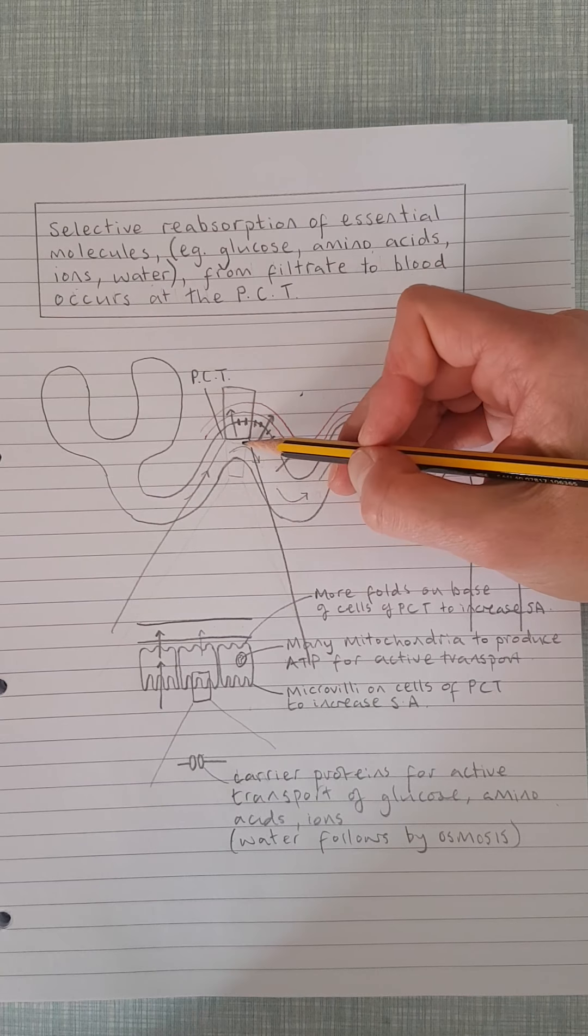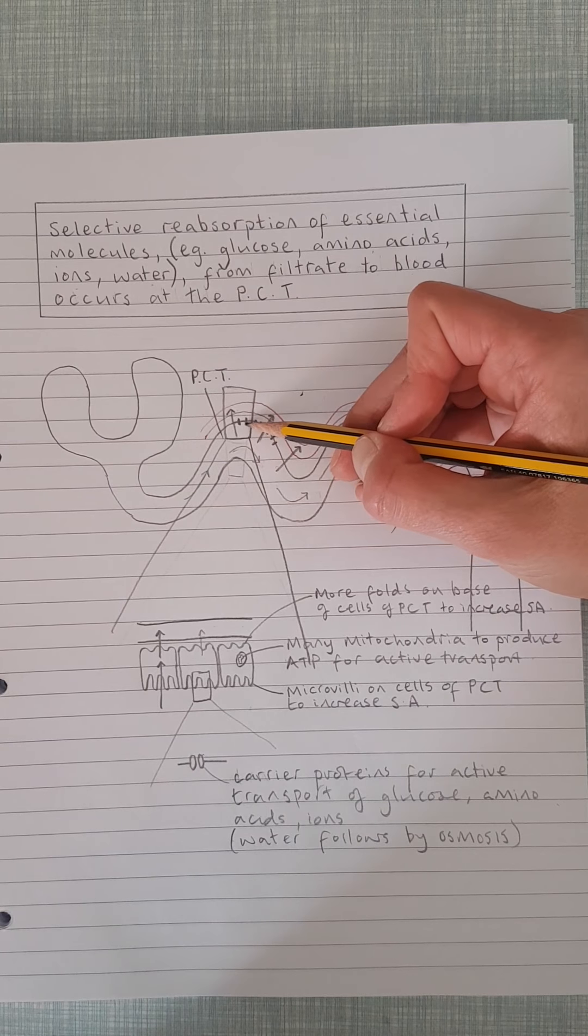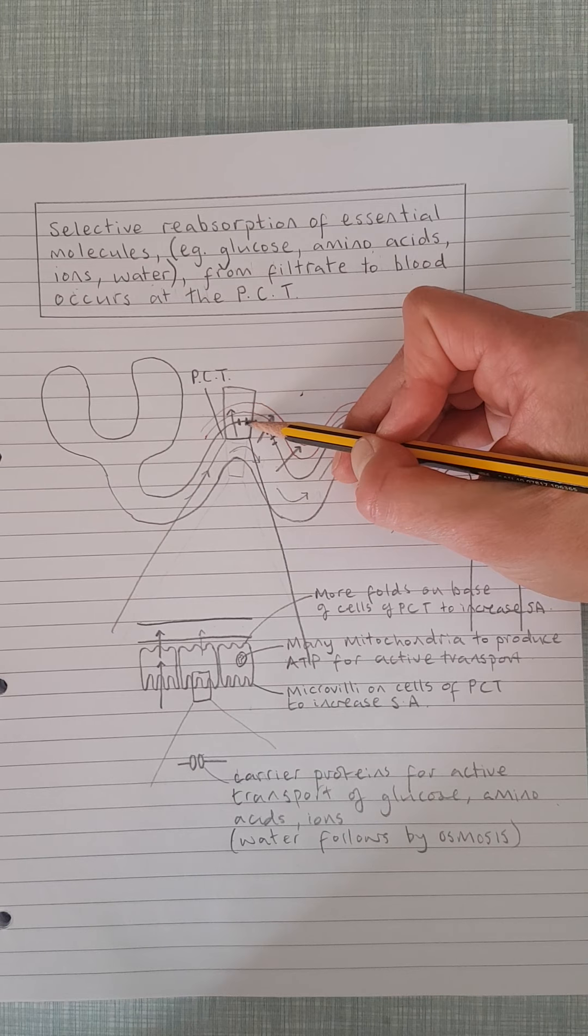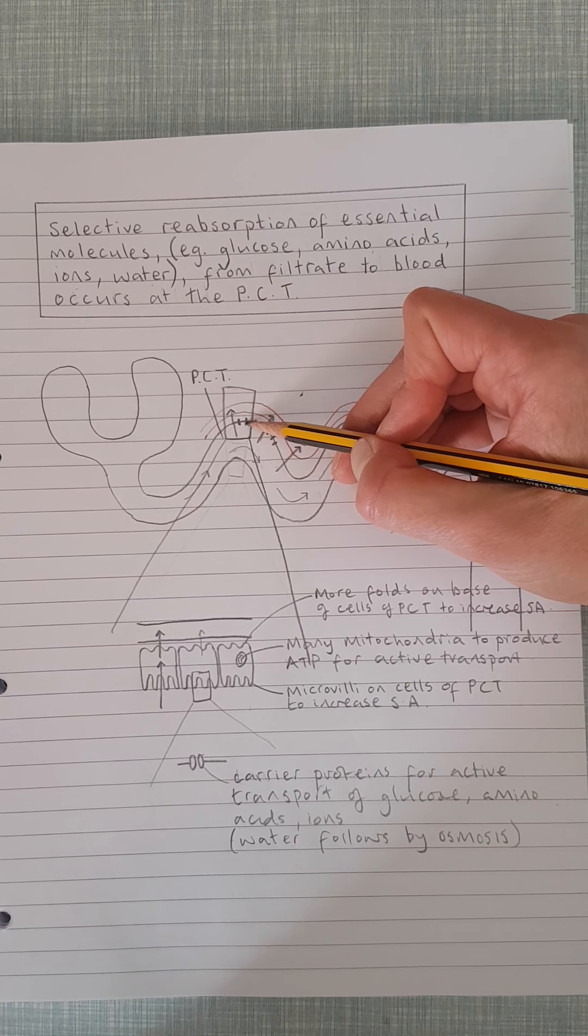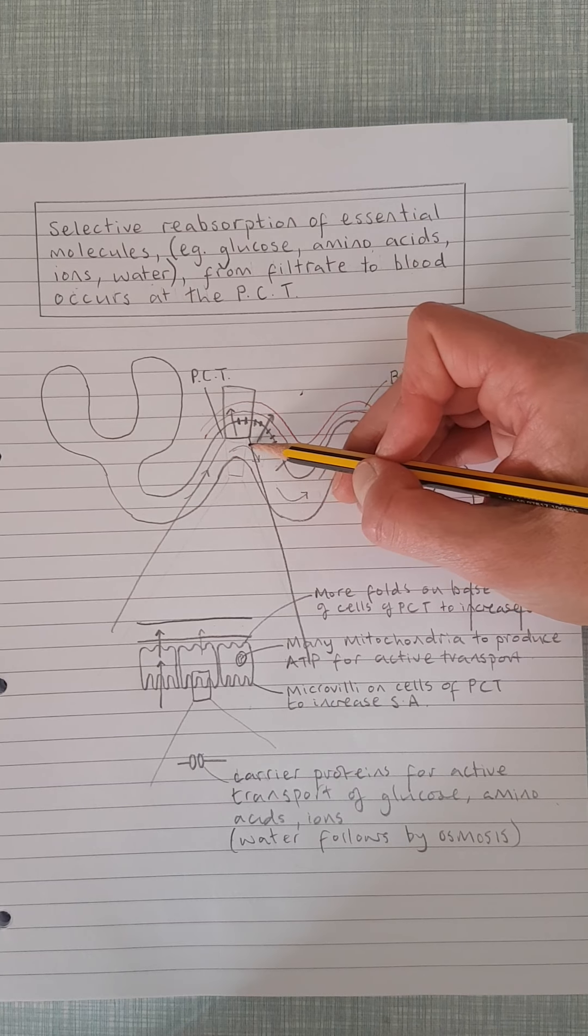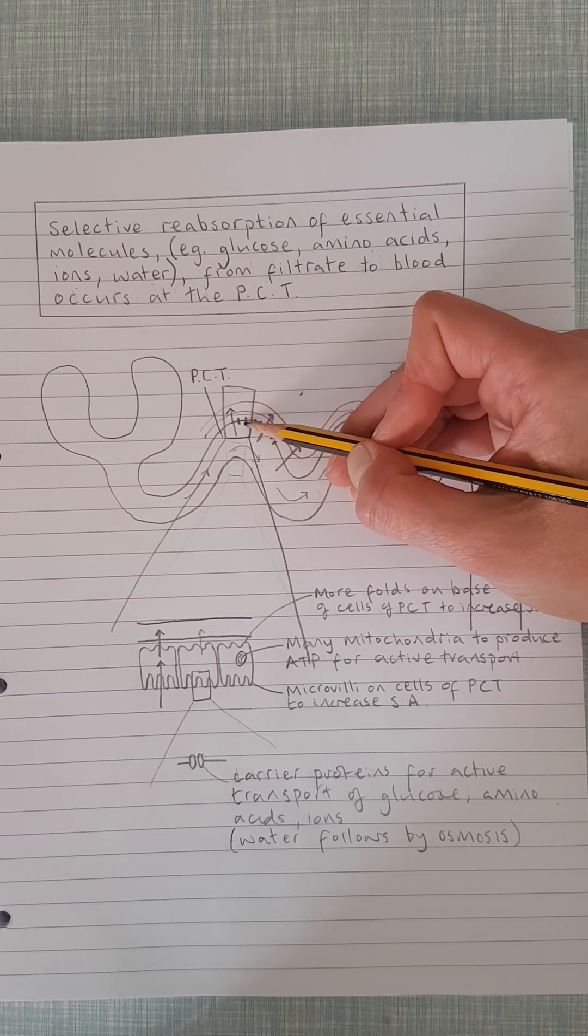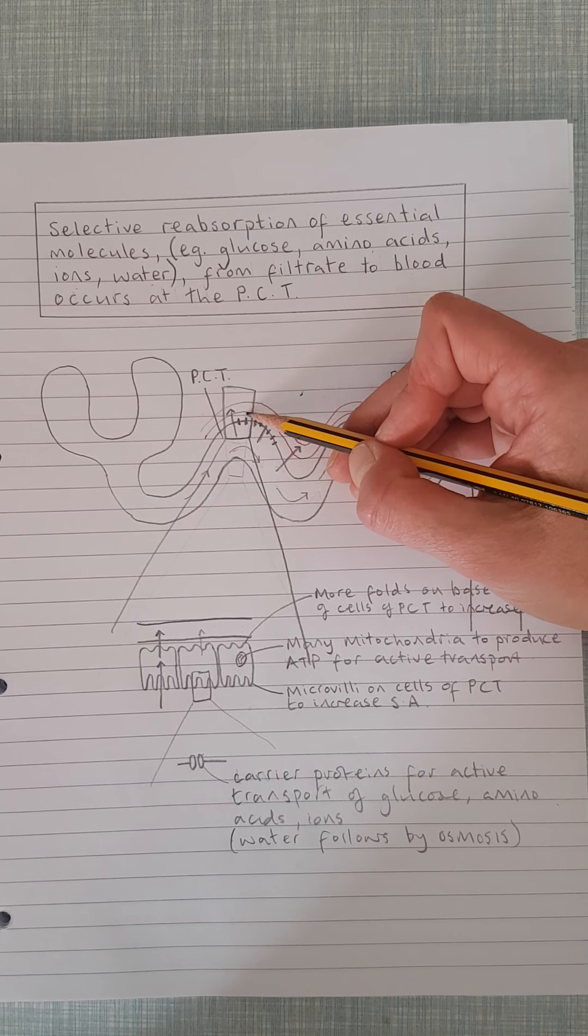And also how fast the filtrate is traveling through. So if you have a very very high concentration of glucose, for instance, inside the filtrate here, there possibly won't be enough of these protein channels to effectively reabsorb all of that glucose. And so what that means is the glucose, because it's not—it's passing through, there's too much of it to be absorbed effectively by these protein channels.